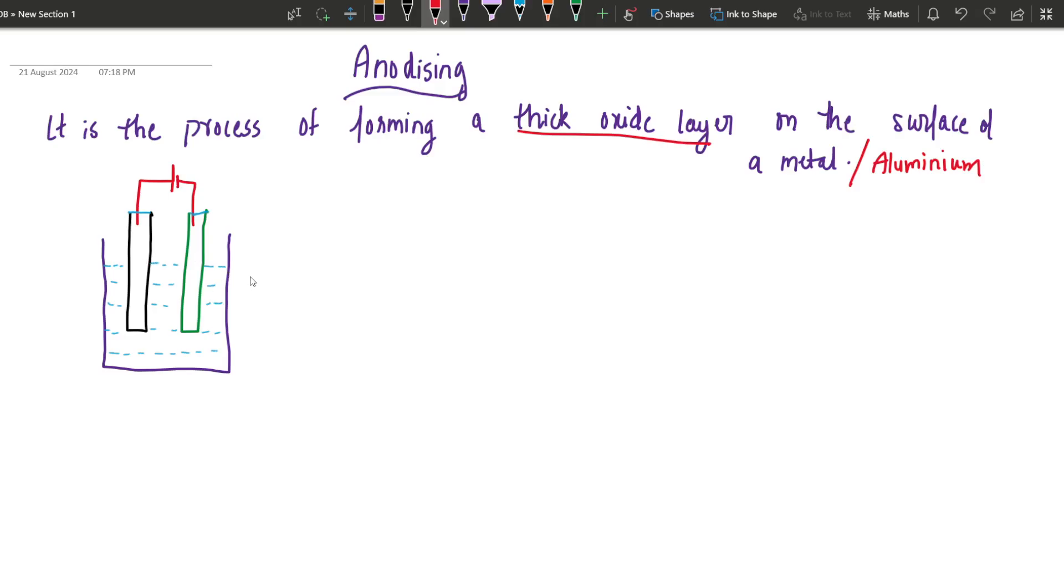Let us see how this aluminum oxide is formed. So the general equation can be: aluminum reacting with oxygen to form Al2O3. This will be the general reaction.